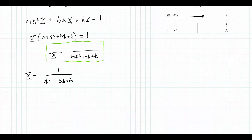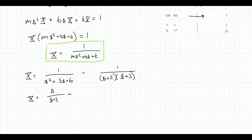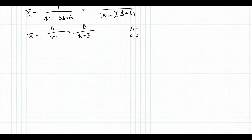Looking at the quadratic denominator, I can factor s² plus 5s plus 6 into (s plus 2)(s plus 3), since 2 and 3 multiply to 6 and add to 5. So X equals 1 over (s+2)(s+3), which can be expanded as A over (s+2) plus B over (s+3). Solving the partial fraction expansion gives A equals 1 and B equals negative 1.